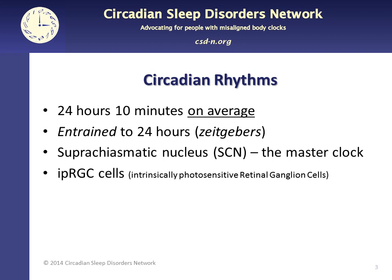The most noticeable feature of the circadian rhythms is the sleep-wake cycle, but there are other rhythms, including swings in many hormones throughout the day, body temperature cycle, appetite, and the times of best alertness. Ideally, these rhythms are in sync with each other and with the light-dark cycle in nature. Most folks are awake during daylight hours and sleep during darkness. The master clock in the body is a small part of the brain called the suprachiasmatic nucleus, or SCN, located in the hypothalamus. The SCN keeps the clocks within organs and individual cells in the body in sync.